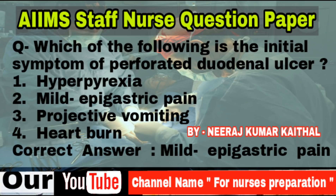Question: Which of the following is the initial symptom of perforated duodenal ulcer? Options: Hyperpyrexia, mild epigastric pain, projective vomiting, heartburn. Correct answer is mild epigastric pain. Duodenal ulcer formation is caused by infection with Helicobacter pylori. Other predisposing factors include anti-inflammatory medications and cigarette smoking. Complications of ulcer include bleeding, perforation and blockage. Treatment involves antibiotics to eradicate H. pylori, eliminating risk factors and preventing complications.